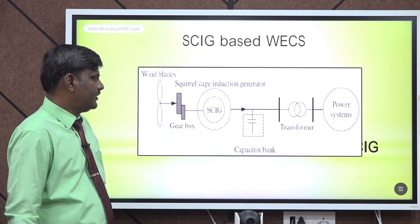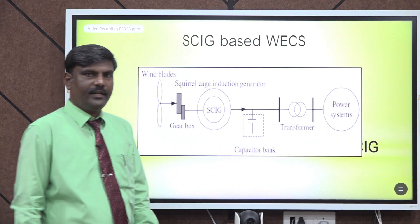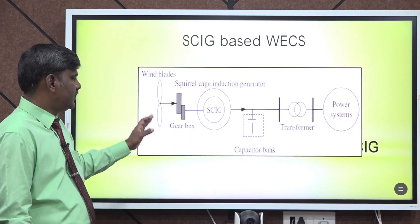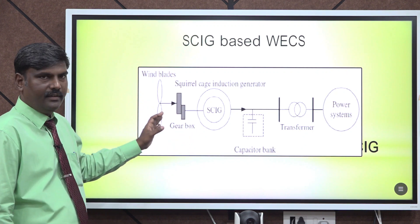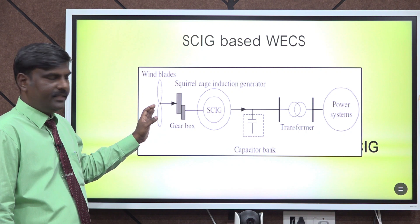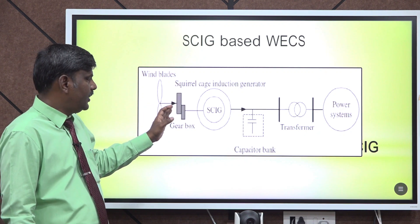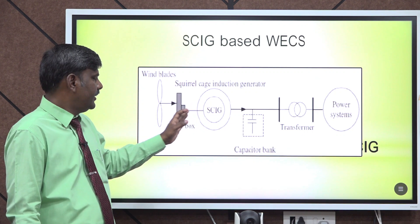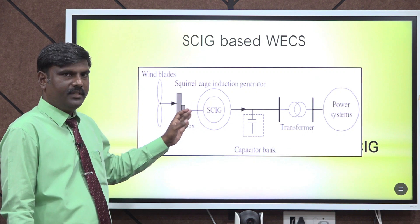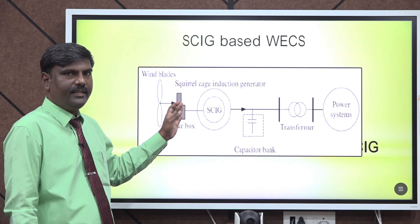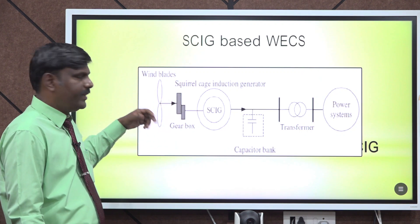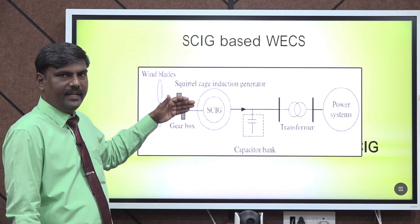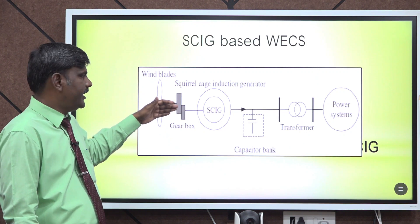First let us see a squirrel cage induction generator based wind energy conversion system — this is the block diagram. First thing is a wind turbine; this collects the wind energy and through a gearbox it is connected with the squirrel cage induction generator. The gearbox is essential to increase the speed because wind turbine speed is very minimal.